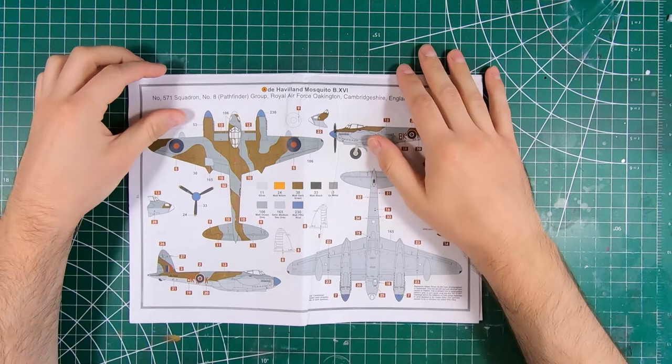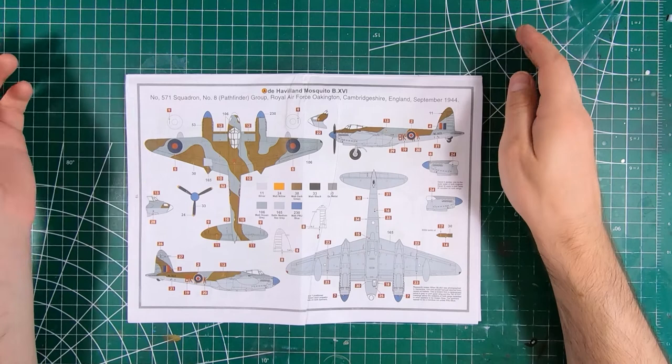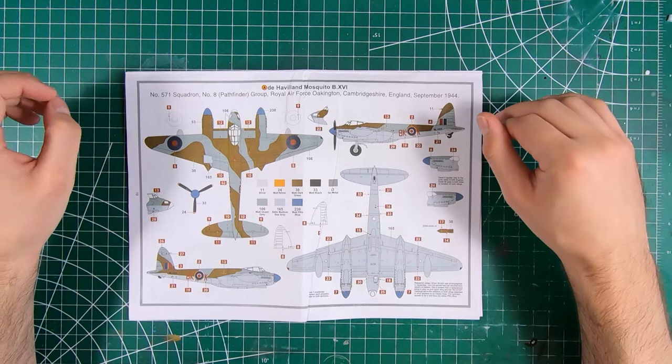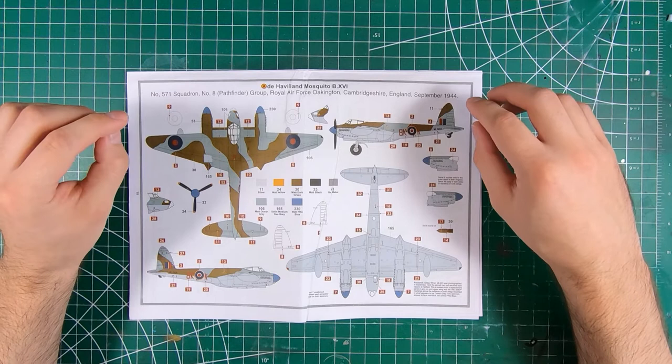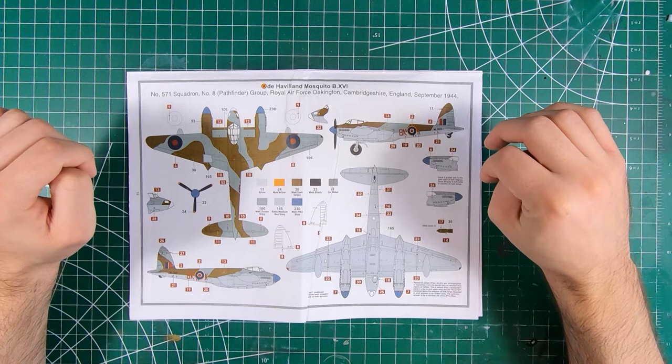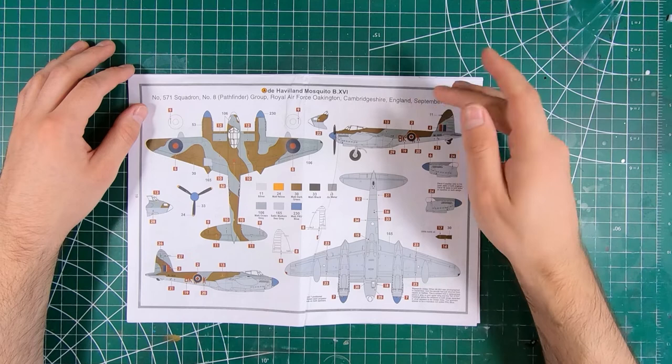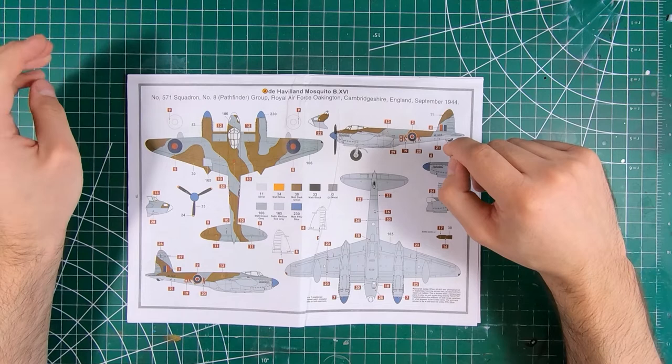Paint options. We've got 571 Squadron from the Pathfinders. These were always the best Mosquito crews in the Royal Air Force. The best navigators and the best pilots because they needed to make sure they knew exactly where they were going, because the hundreds of Lancasters and Halifaxes following them were expecting these guys to mark the target so they could hit it. Standard sort of paint scheme. Medium sea gray on the bottom, ocean gray and dark green on top. There's some pretty blue spinners.